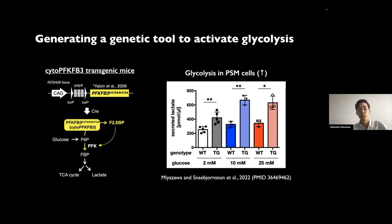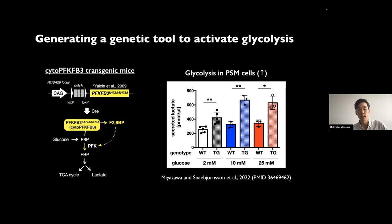Here I show you the data of lactate distribution from wild type and transgenic PSM explants. The transgenic has two times higher lactate distribution compared to the wild type. Another key message here is that lactate distribution was glucose dose-dependent, so by increasing glucose you can also activate glycolysis both in wild type and transgenic.